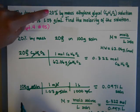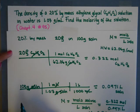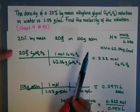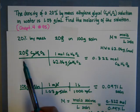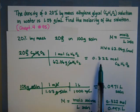So as you can see, we did our 20%, converted that to 20 grams in a 100 gram solution. And that 100 gram solution is used to find the liters of solution, and the 20 grams is used to find the moles.